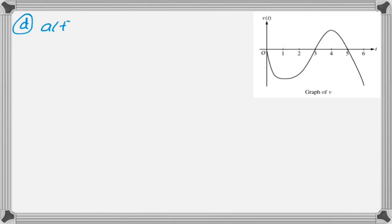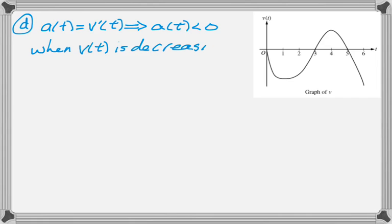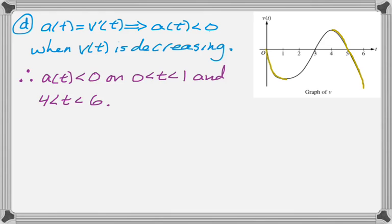Finally, part D: where is the acceleration of the particle negative? Acceleration is v'(t), which means acceleration will be less than 0 on any interval where v(t) is decreasing. We're told velocity has horizontal tangent lines at t = 1 and t = 4. So a(t) < 0 on the intervals 0 to 1 and 4 to 6. That's how I would do this problem. Hope you found this helpful. Good luck.